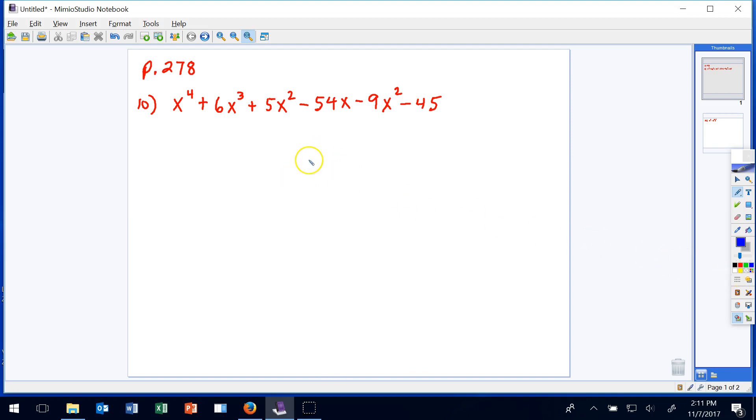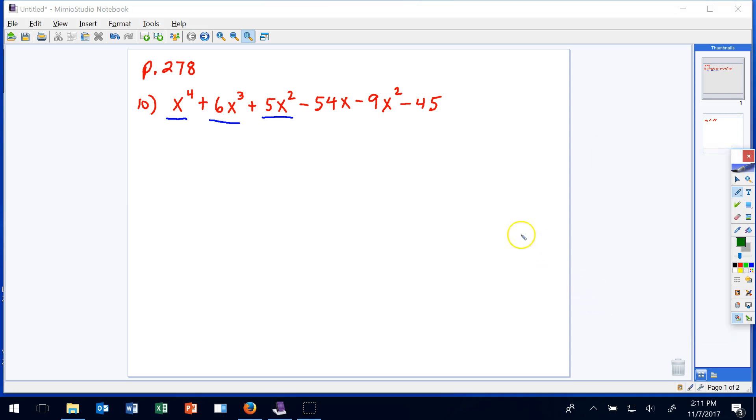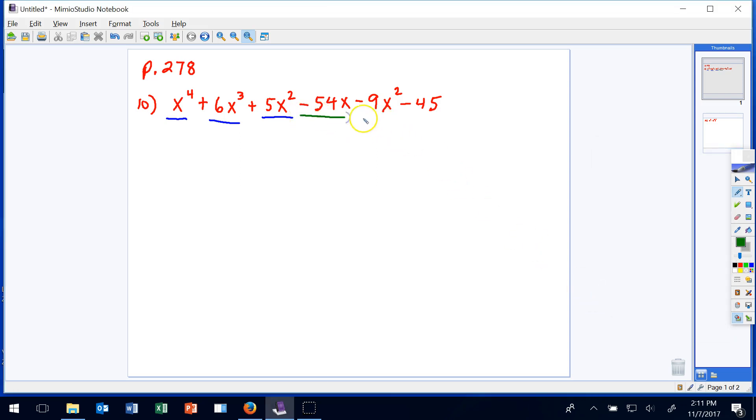Well this problem is really nice because they've pretty much already set this up so that these first three terms have something in common, x squared, and the second three terms, if you notice they're all divisible by 9 or negative 9, so they're already lined up for us.